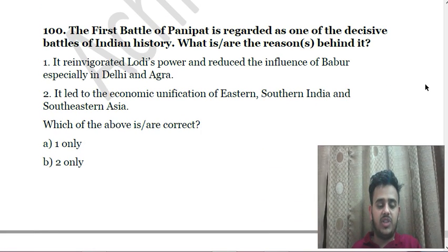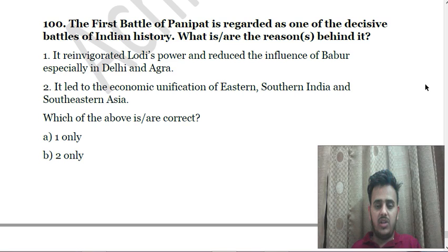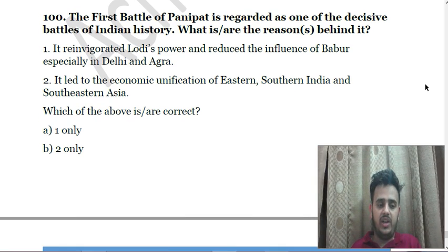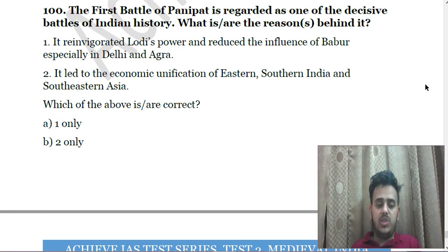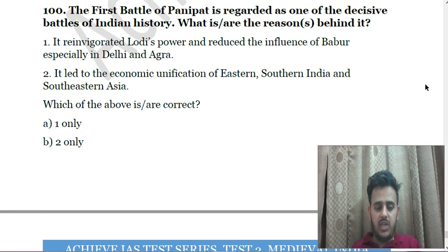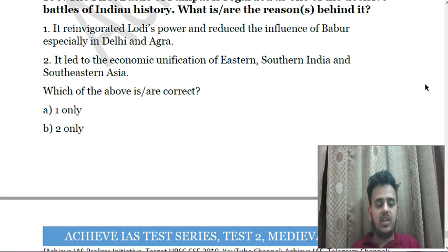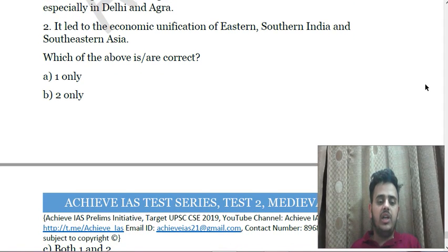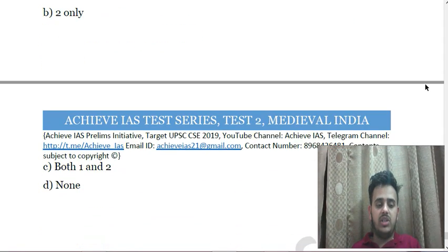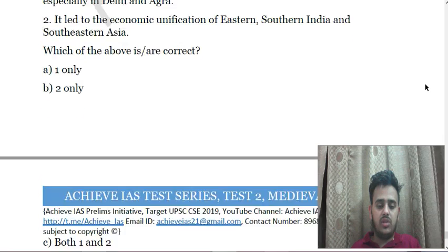Next: The Rajatarangini by Kalhana is — A. A Sanskrit account of various monarchies of Kashmir; B. Genealogy of major kingdoms in southern India; C. Accounts of Deccan wars and invasions by foreigners; D. A spiritual guide to the kingdoms of medieval India. The last question: The First Battle of Panipat is regarded as one of the most decisive battles of Indian history. What are the reasons? First, it reinvigorated Lodi's power and reduced the influence of Babur especially in Delhi and Agra; Second, it led to economic unification of eastern, southern and southeastern India.